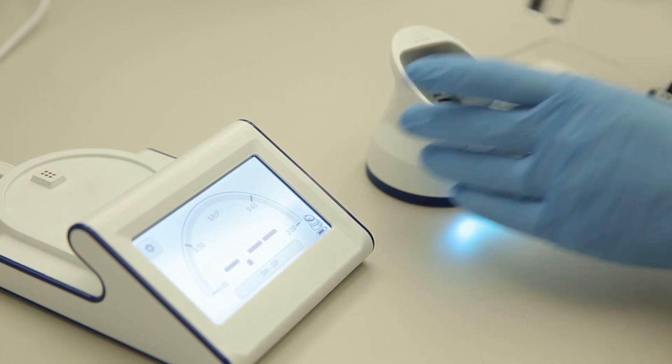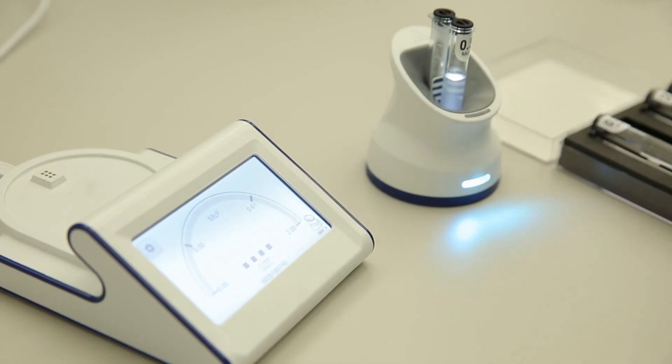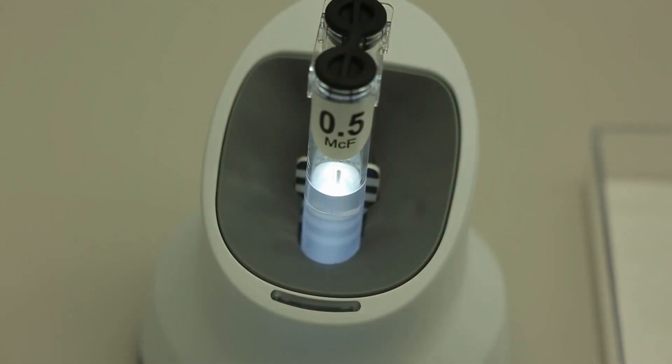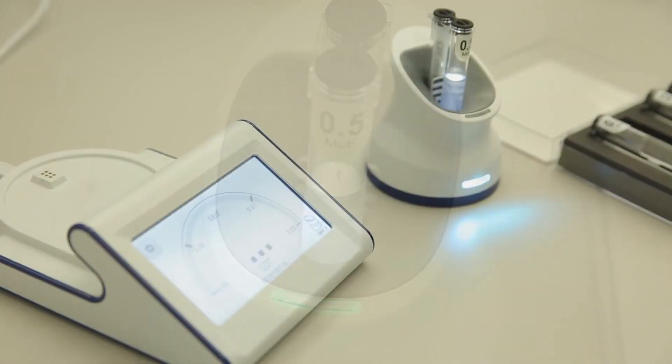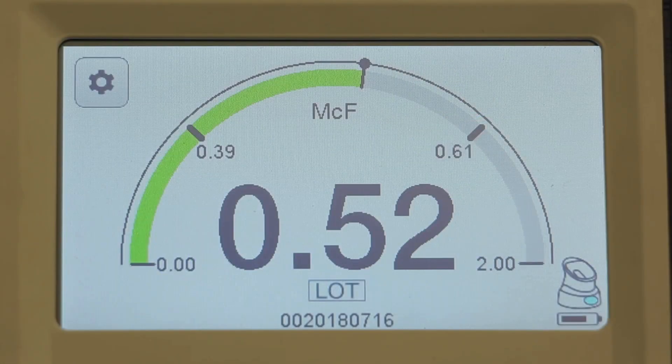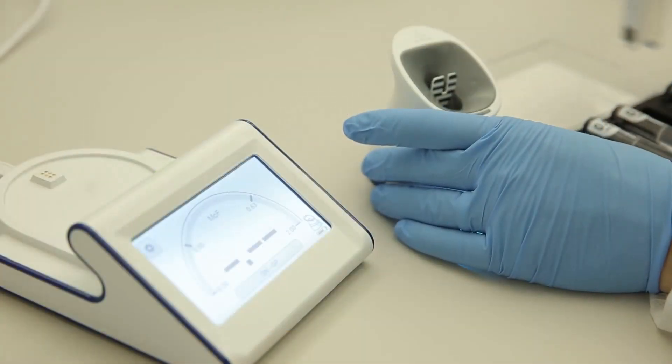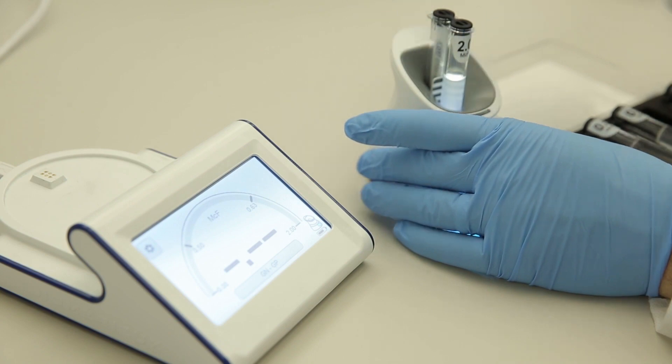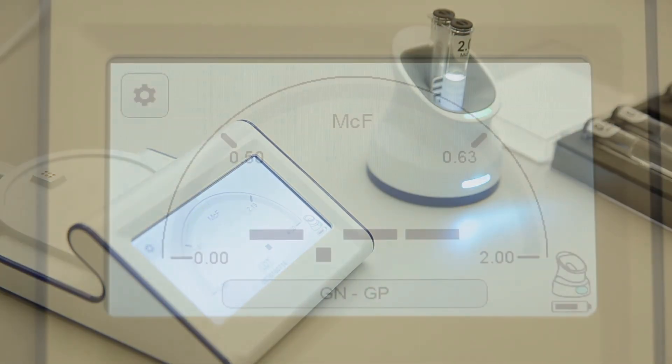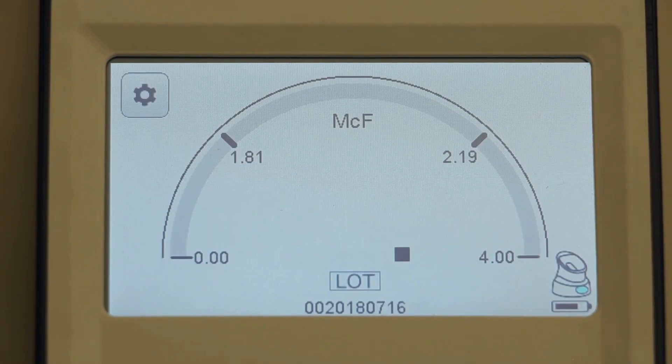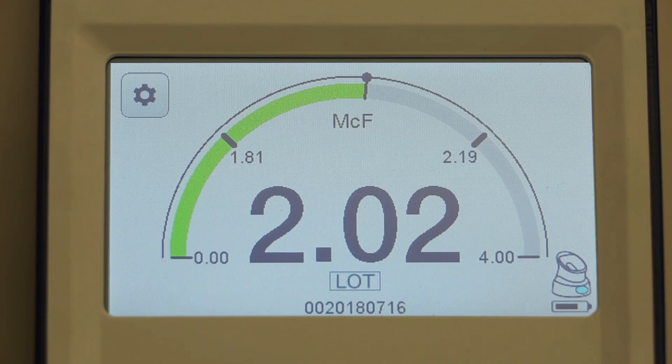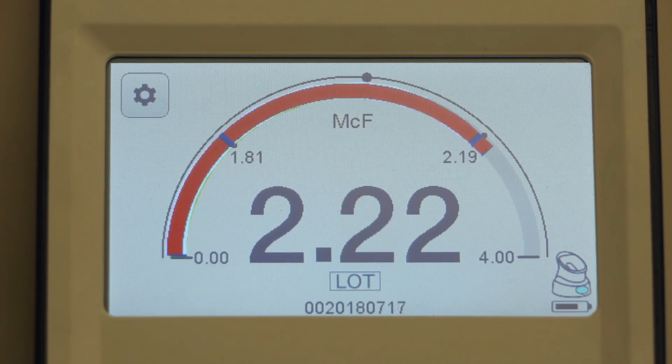For the other references, insert them into the pod in the same manner with the McFarlane reference value facing the user, and record the value that appears automatically on the McFarlane meter according to your lab's quality control guidelines. If the value displays a green-colored meter gauge, it is a passing value. If it displays a red-colored meter gauge, it failed.